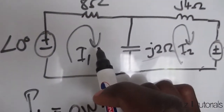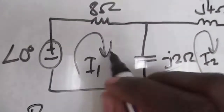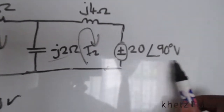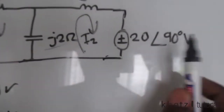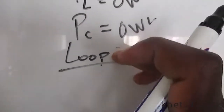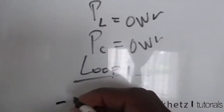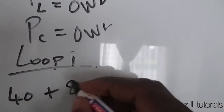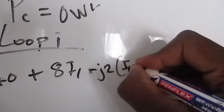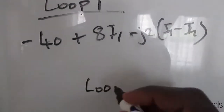For the other elements, let's assign loop currents i1 and i2. Looking at loop one, we're going to find this current, which will help us find the voltage across there and the current in this loop — helping us compute the power associated with those voltage sources. For loop one, going around the loop associated with i1, we have negative 40, then 8·i1, then negative j2·(i1 − i2). That is loop one.